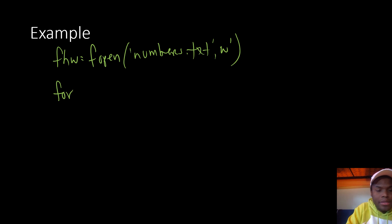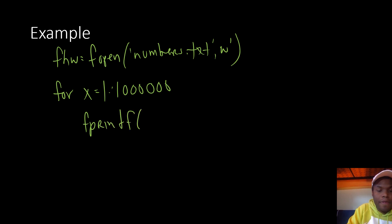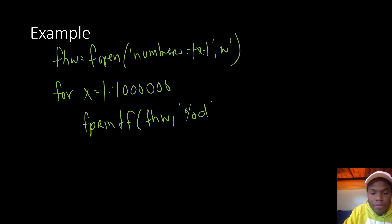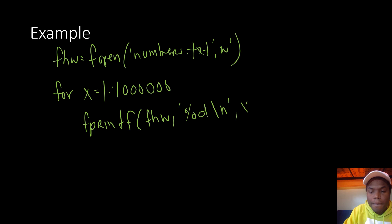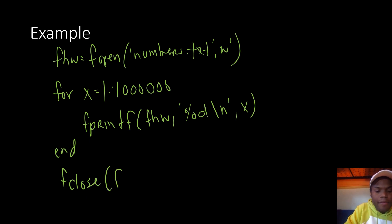Inside a for loop — for x = 1:1000000 — we call fprintf(fhw, '%d\n', x). This uses %d as a placeholder for the number and \n to put each number on a different line. After the loop, it's always good practice to close the file: fclose(fhw).